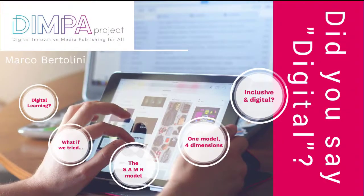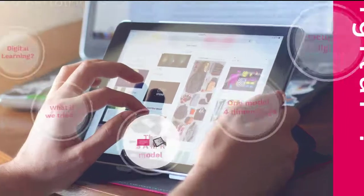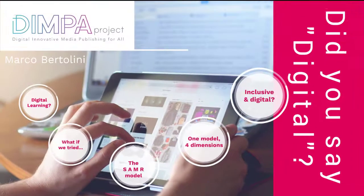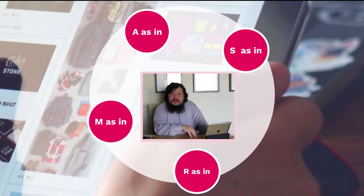There is a model that can help, which is called the SAMR model. The SAMR model assesses our level of digital disruption, because most of the time when people talk about digital learning, they talk about doing the same thing with digital tools that they did before with analogical tools.